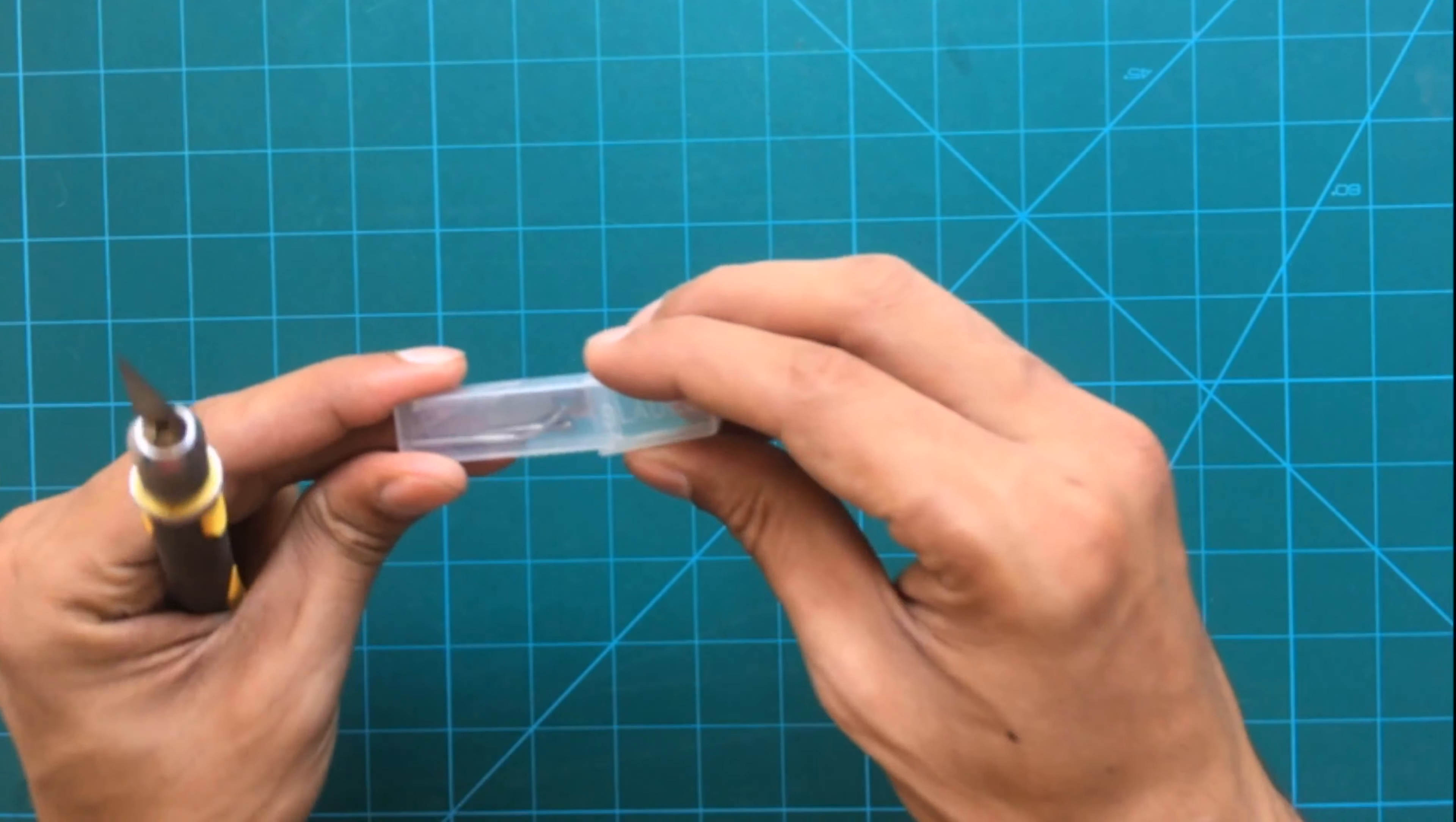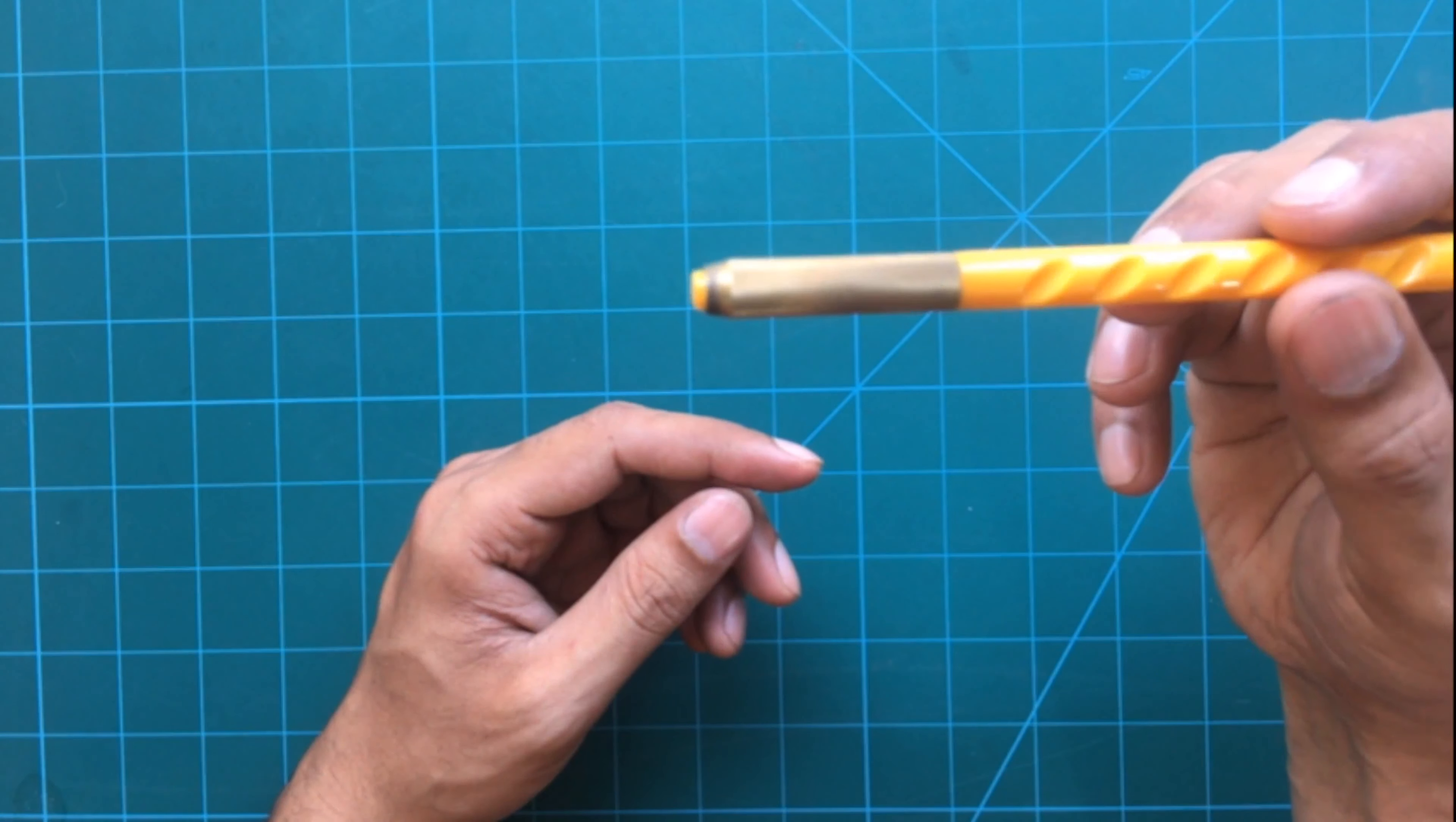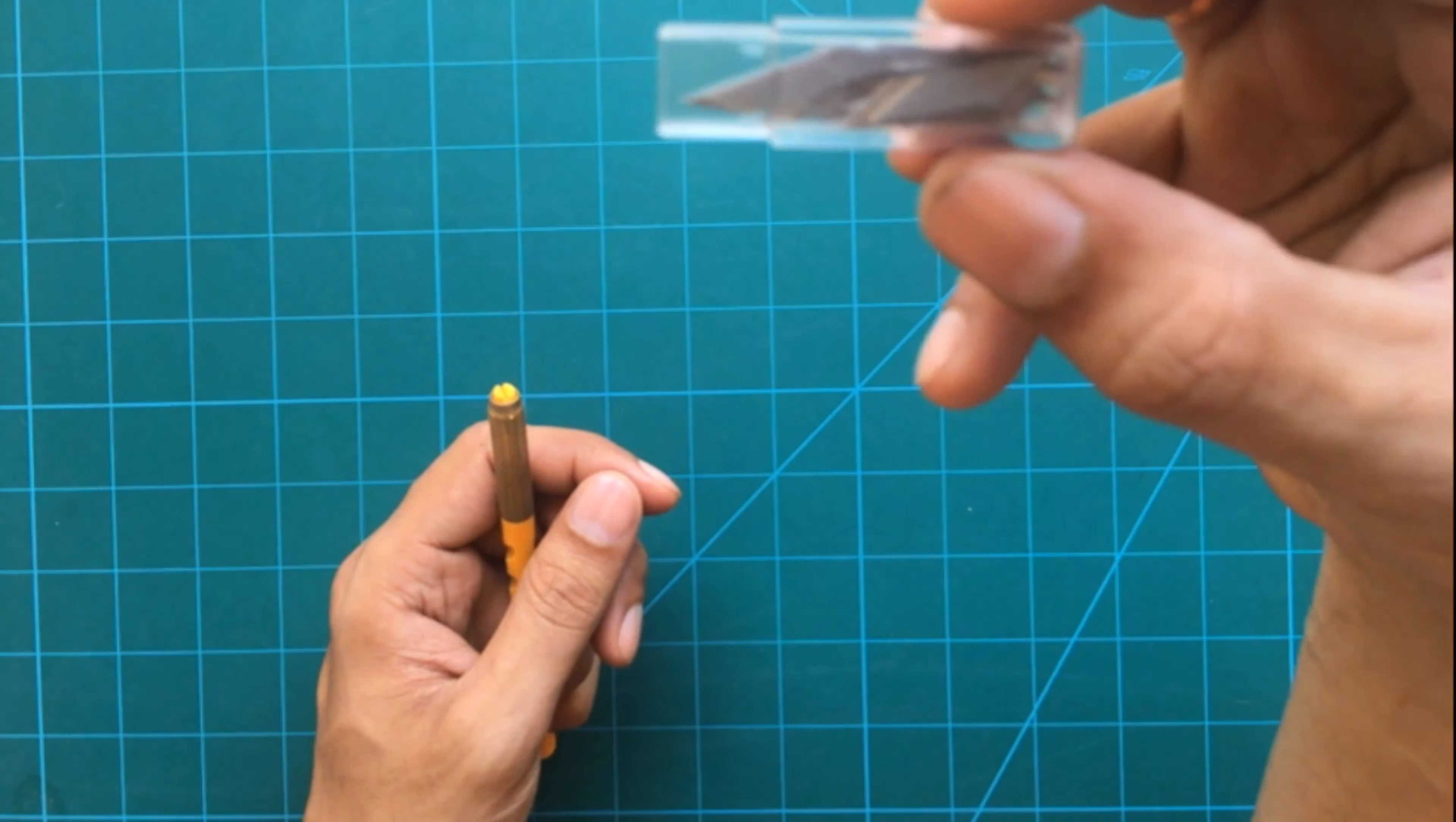With each paper cutting knife, you get few spare blades and these are the spare blades I got with this knife. The next knife I have is this slender yellow knife with a longer grip as compared to the previous knife.